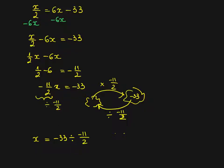Again you can do this with your calculator. A negative number divided by a negative number gives a positive number. So I'll have 33 divided by 11 over 2. I divide by a fraction by multiplying by the reciprocal of the fraction. So it's 66 over 11 which gives me 6. So x equals 6.